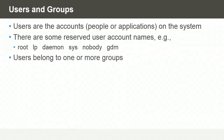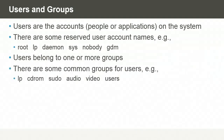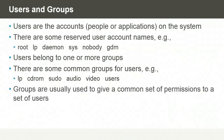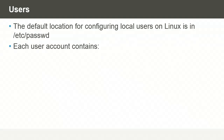Users in Linux belong to one or more groups. Just as is the case with users, there are some common groups that already exist, such as LP, CD-ROM, SUDO, and so on. Groups are normally used to give a common set of permissions to a set of users. This is much more manageable than assigning permissions for each individual user account. The default location when we configure a local user account in Linux is in the /etc/passwd file.